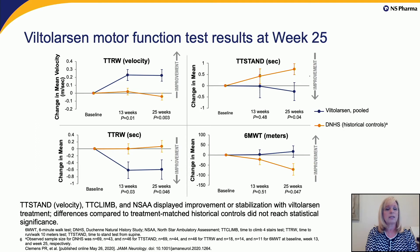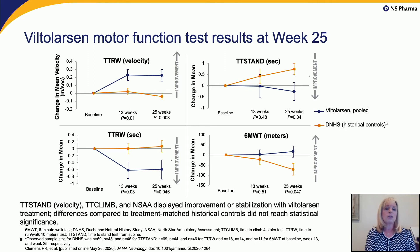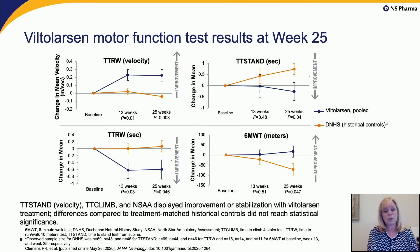We also examined motor function tests at week 13 and week 25 — time to run/walk, time to stand, six minute walk test — comparing viltolarsen-treated patients to matched historical control patients adjusted for age, glucocorticosteroid use, and baseline assessments. In each of these four tests, viltolarsen showed statistically significant improvement compared to historical controls. Time to stand velocity, time to climb, and the NSAA also showed improvement or stabilization, though these just missed statistical significance.